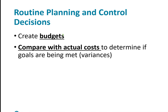Routine planning and control decisions involve creating budgets and comparing actual costs to those budgets. We get into an entire chapter that talks about variances — simply comparing what you budgeted versus what the actual cost is.